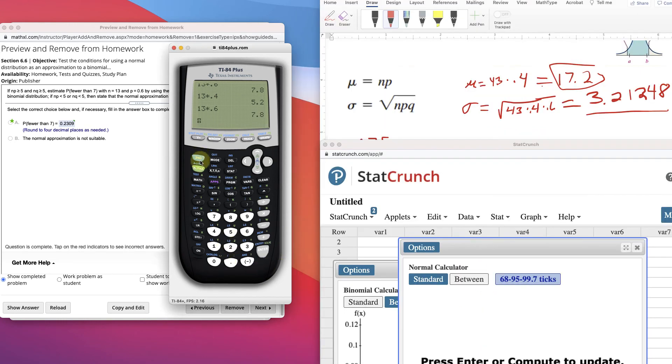And our standard deviation, the square root of n, 13, p, 0.6, q, times 0.4, 1 minus p, remember. And then hit enter.